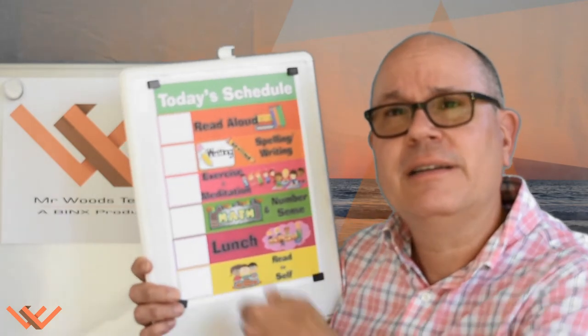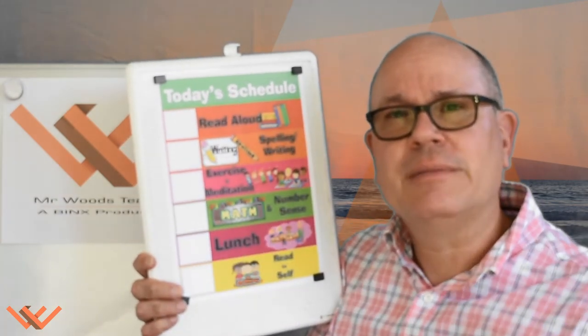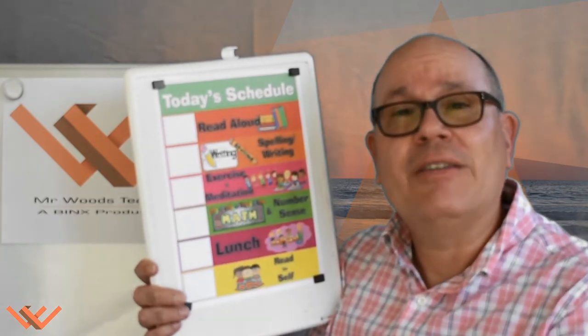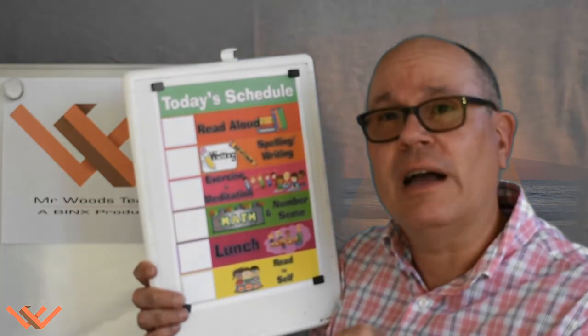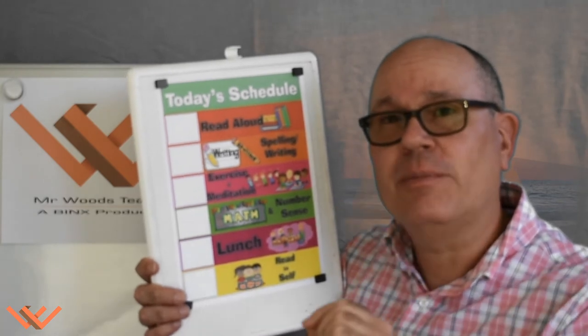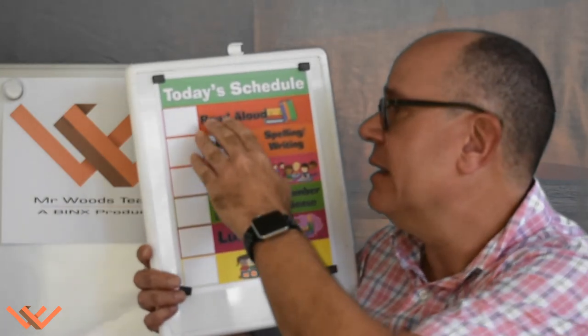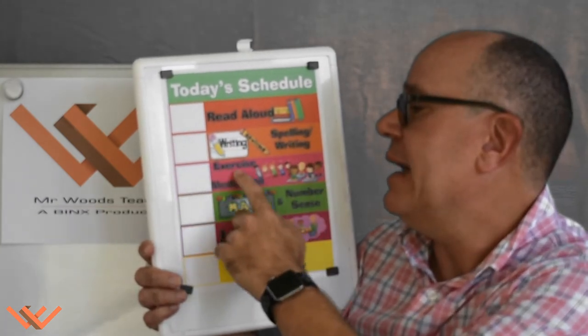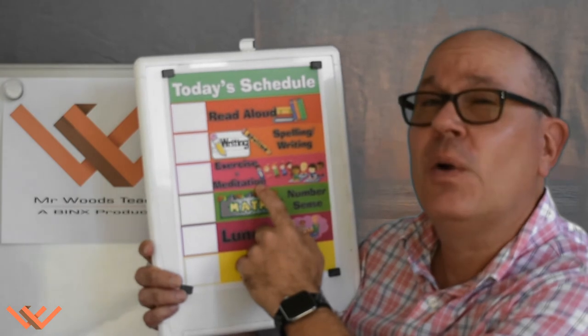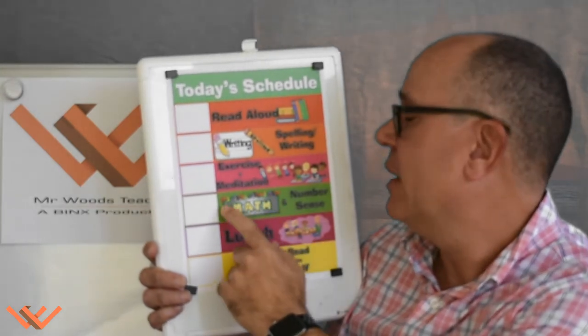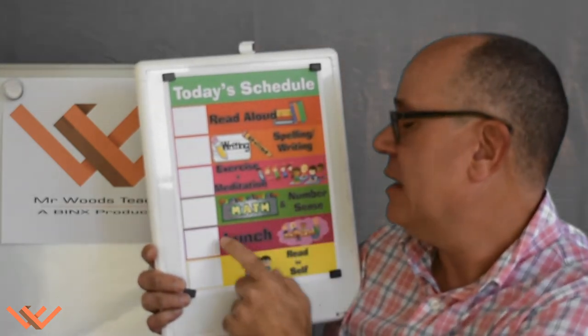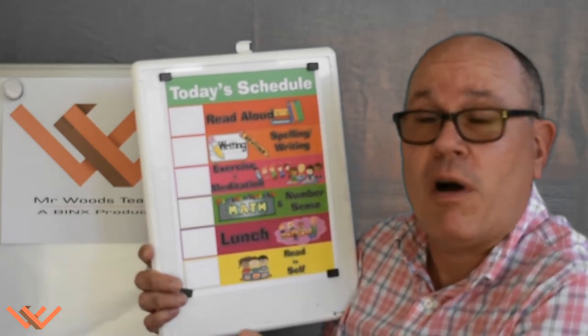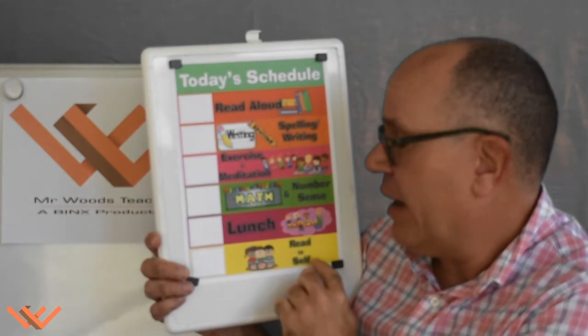What I've done is I've created a schedule for you. You can use this or create your own. I have a document that will be posted online, and the link will be in the description of the video. Let's take a look at this. Today's schedule: read aloud, spelling, writing, exercise and meditation. We're going to come back to meditation. Math and number sense, lunch. Hey, schedule something that they really want, and then read to self.